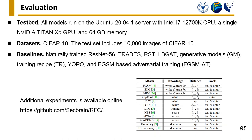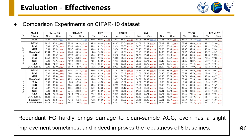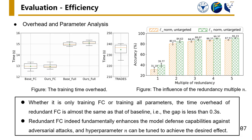In order to evaluate the effectiveness and efficiency of our scheme, we compared it with eight baselines on the CIFAR10 dataset. The experiment results reflect that redundant FC hardly brings damage to clean sample accuracy, and even has a slight improvement sometimes, while indeed improving the robustness of eight baselines. Also, whether training only the FC or training all parameters, the time overhead of redundant FC is almost the same as that of the baseline. Moreover, it fundamentally enhances the model's defense capabilities against adversarial attacks, and the hyperparameter can be tuned to achieve the desired effect.